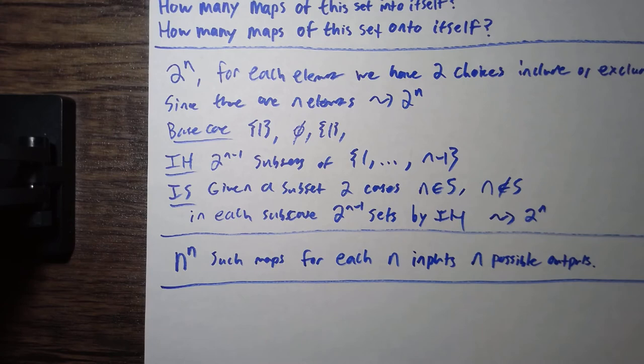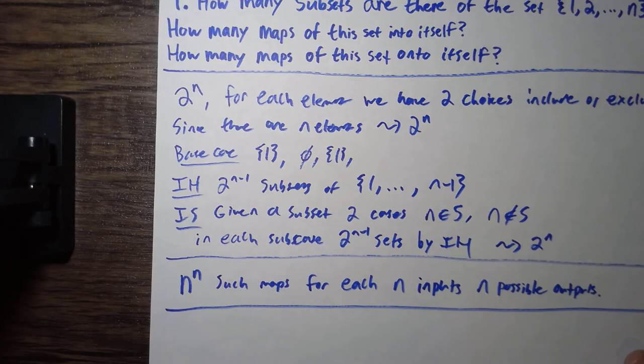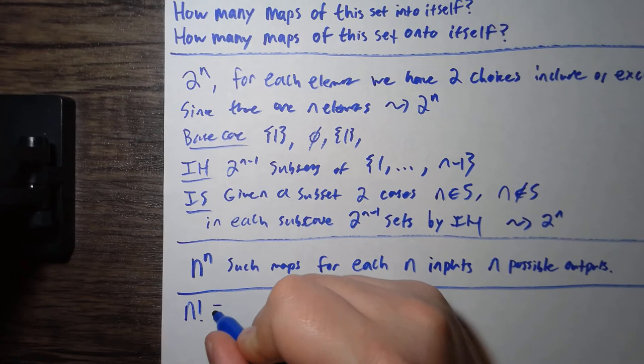And the last case is, how many maps of this set onto itself? Well, so since we have a set of n elements, since it's onto, it's also going to be injective. So, we're talking about bijections here.